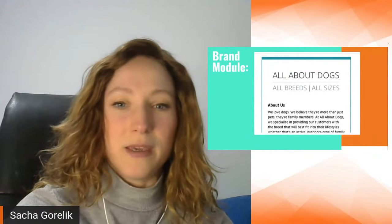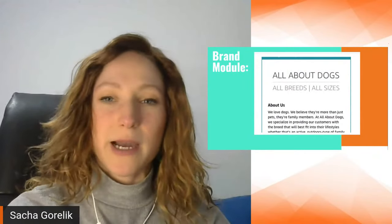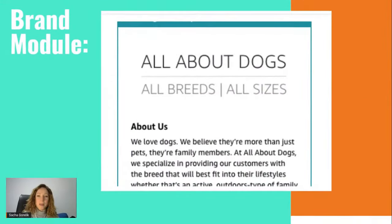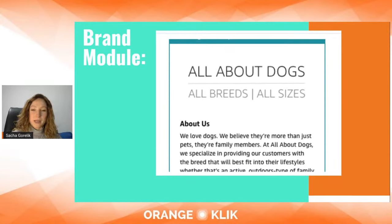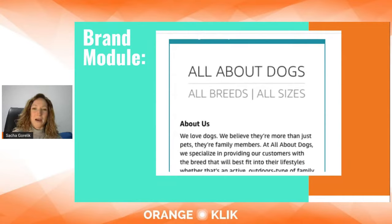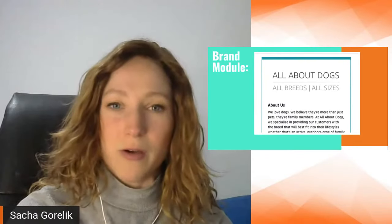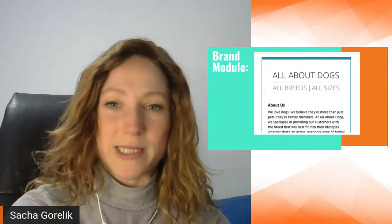Then we have the about us module. It can get repetitive, which is why it's good for the question section to come up with something more interesting than just how you got started — otherwise it'll overlap with this module. In this module you can write about what your brand does, what makes you different, things like that. You can choose not to add the about us section, just have the brand images, or just have the product image tiles on the brand story section.